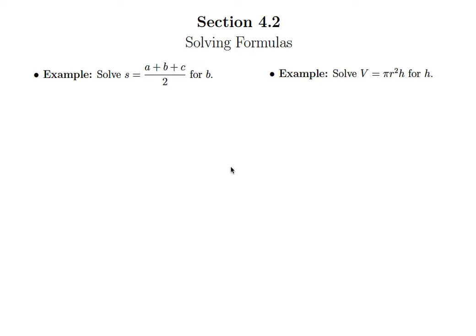In this lesson we're going to solve two more formulas for a specific variable. In the one on the left we're going to solve s equals a plus b plus c all over 2 for b, for that variable in the middle on top of that fraction.